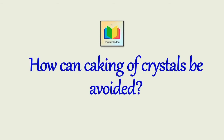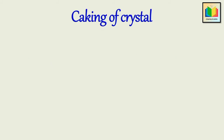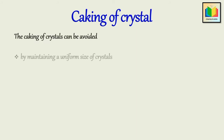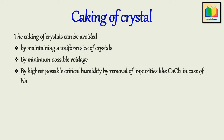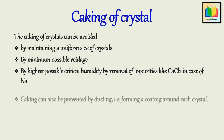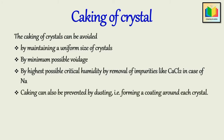Next question: How can caking of crystals be avoided? Caking creates many problems in handling and use of crystals and needs to be prevented. The caking of crystals can be avoided by maintaining a uniform size of crystals, by minimum possible voidage, by highest possible critical humidity, by removal of impurities like calcium chloride in case of sodium chloride, free acids, etc. Caking can also be prevented by dusting, that is, forming a coating around each crystal.